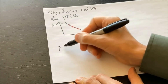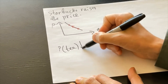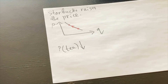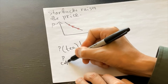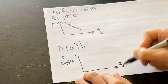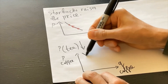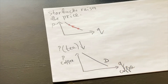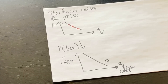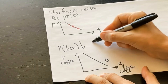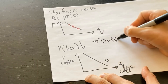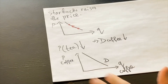For example, suppose the price of tea falls, so tea is less expensive. What will happen to the demand for coffee? Tea and coffee are substitutes — we can replace one with the other. So if the price of tea falls, tea is cheaper, which means people will buy more tea, which means they will buy less coffee. So demand for coffee will fall.